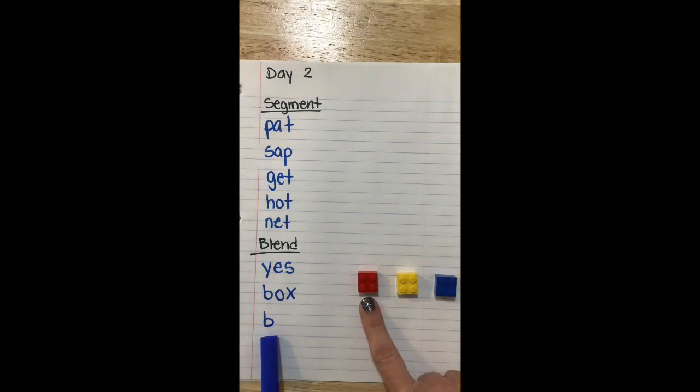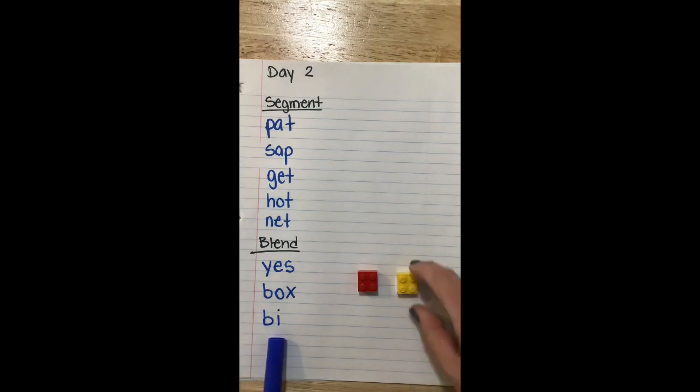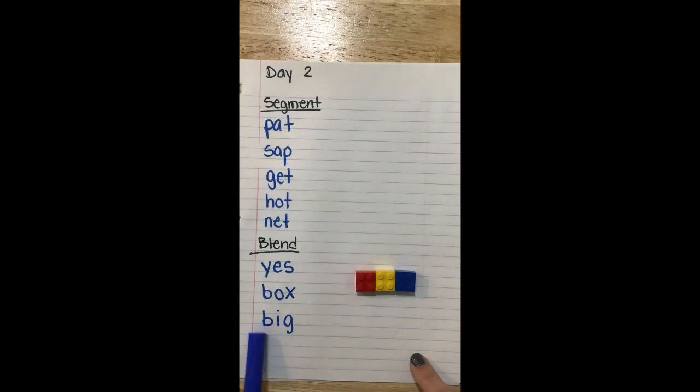Sound, B. Sound, I, blend, B-I. Sound, G, blend, BIG. Word, BIG.